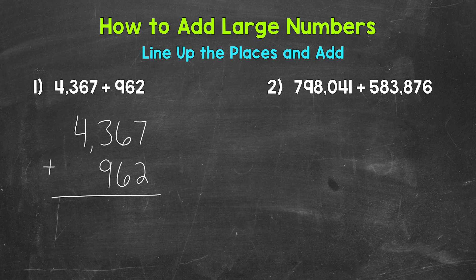Once we're lined up, we add, and we always start with the furthest place to the right. When working with whole numbers, this is going to be the ones place. We have seven plus two, which is nine. Now we work our way left to the tens place. We have six plus six — technically this is 60 plus 60 because we are in the tens place, but we can think of it as six plus six.